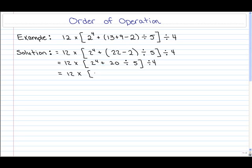So applying 2 to the power of 4 works out to 16. Then within the bracket, we have division, which comes before addition. So apply the division first. So we should have 12 multiplied by 16 plus 20 divided by 5 is 4. Then divide it by 4 again.